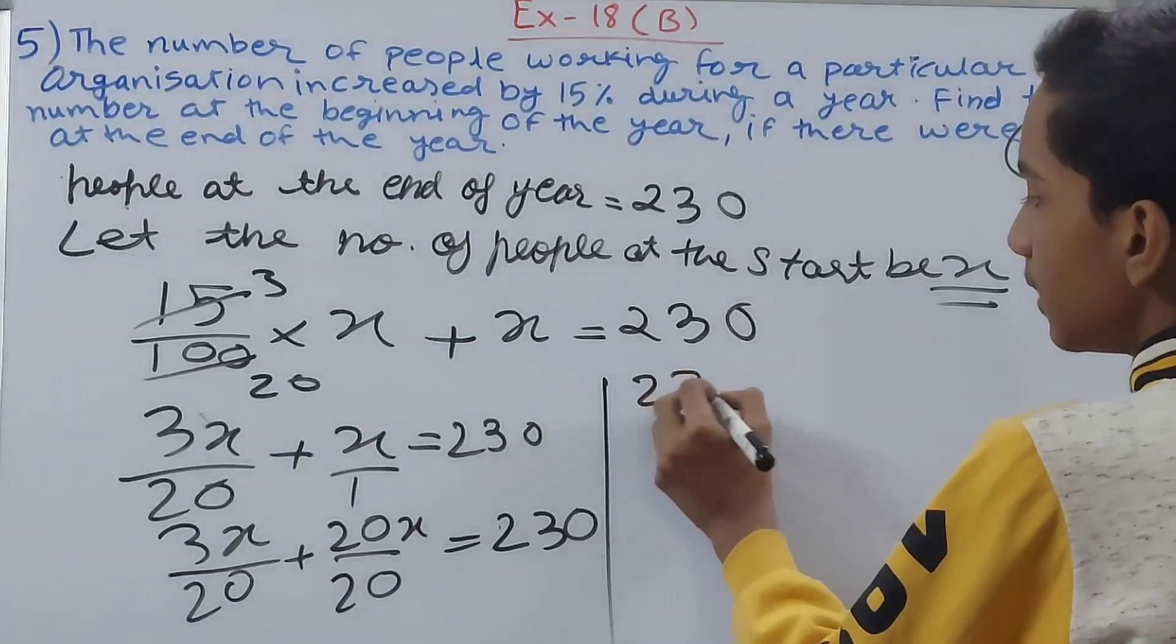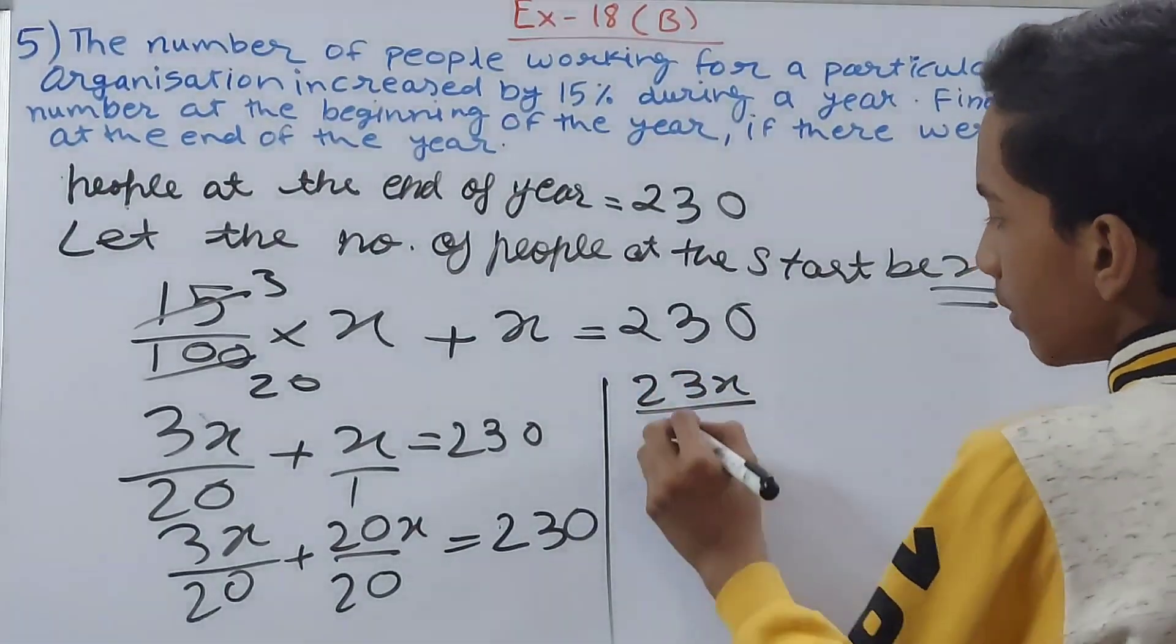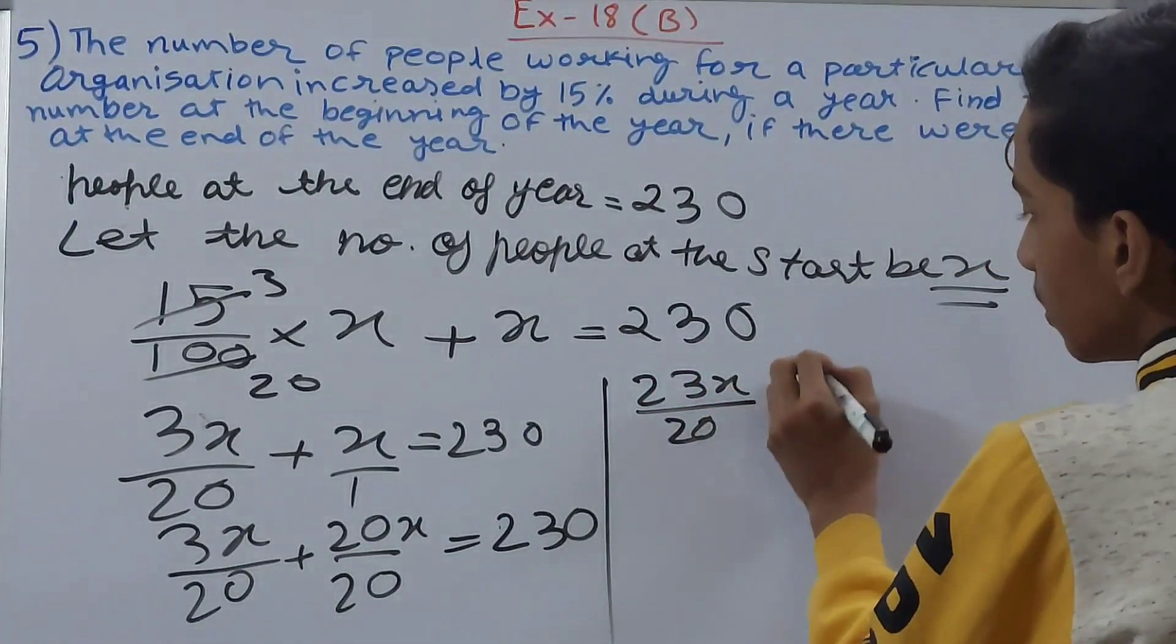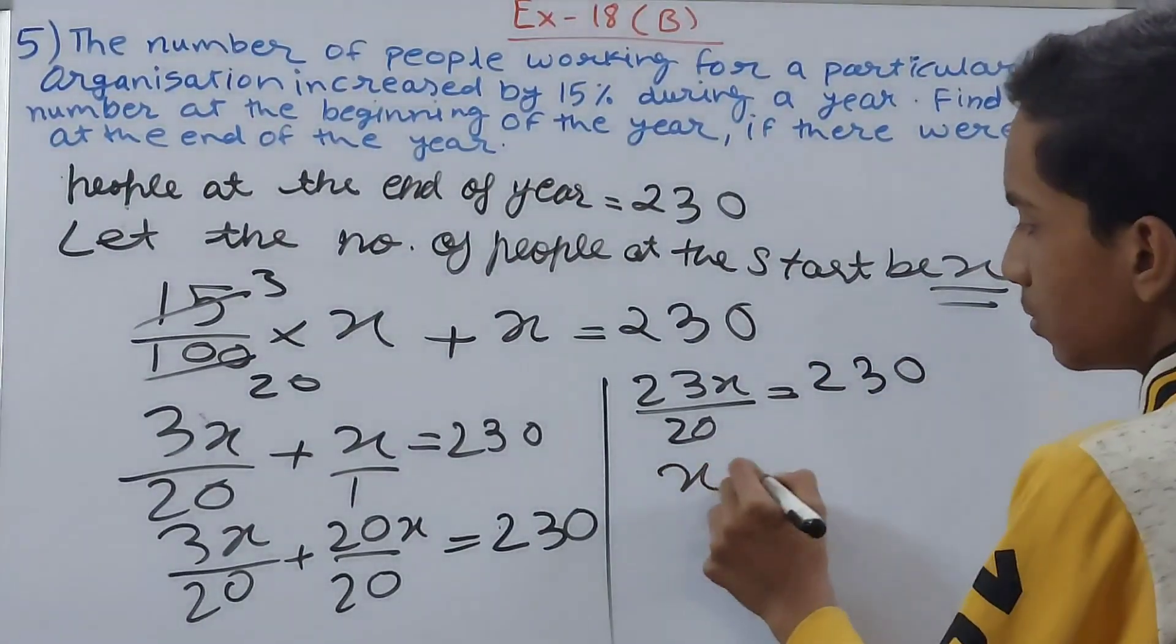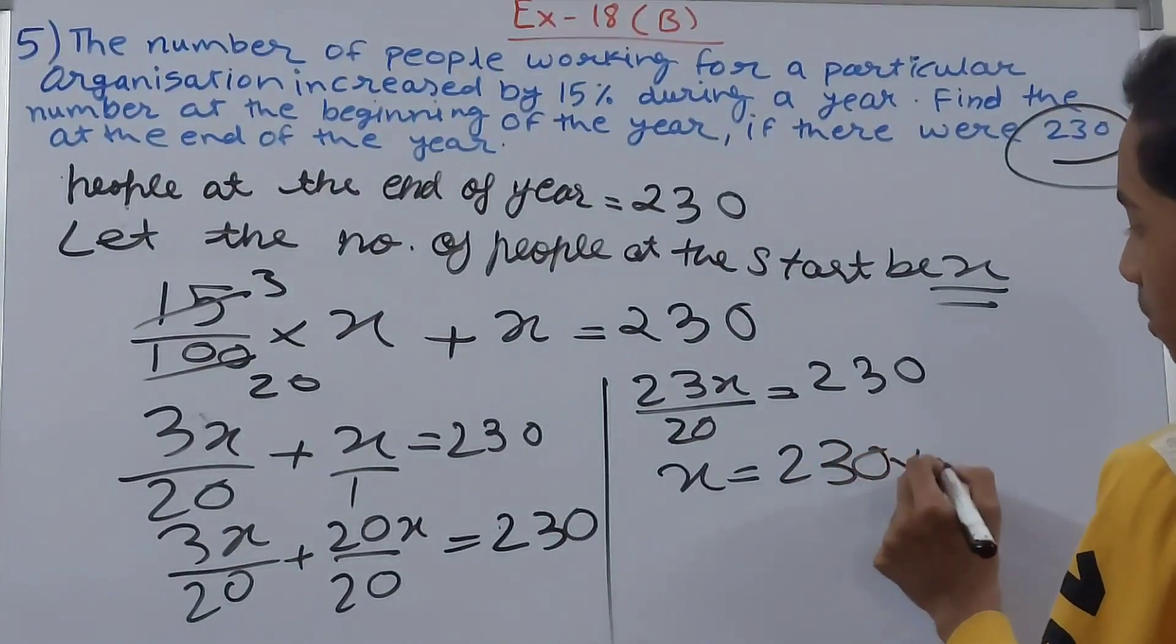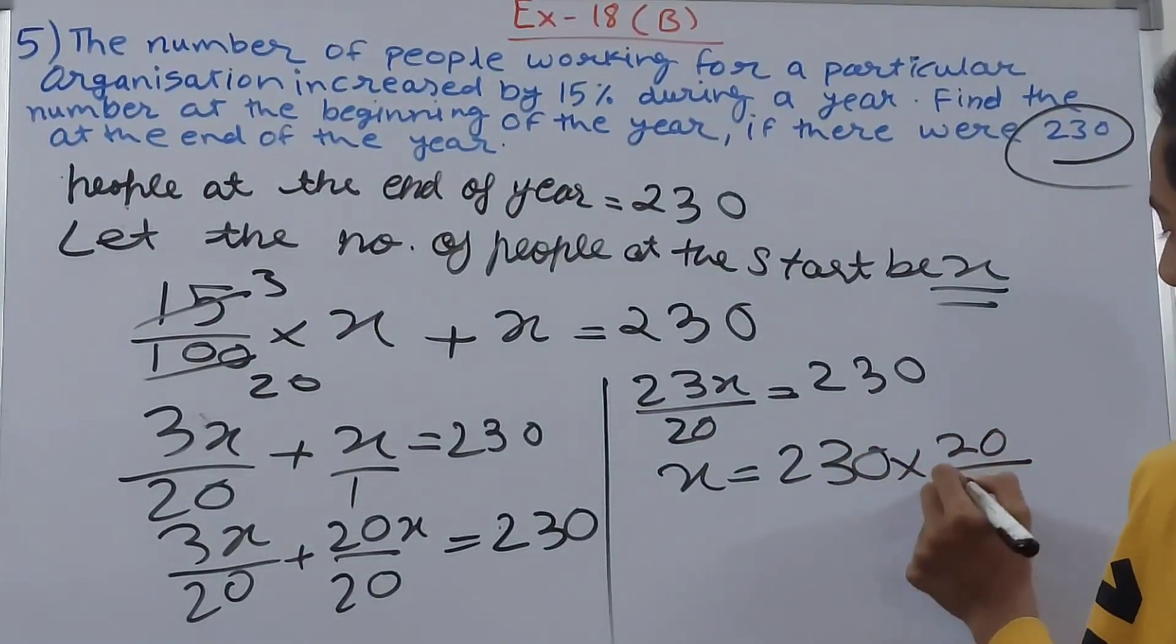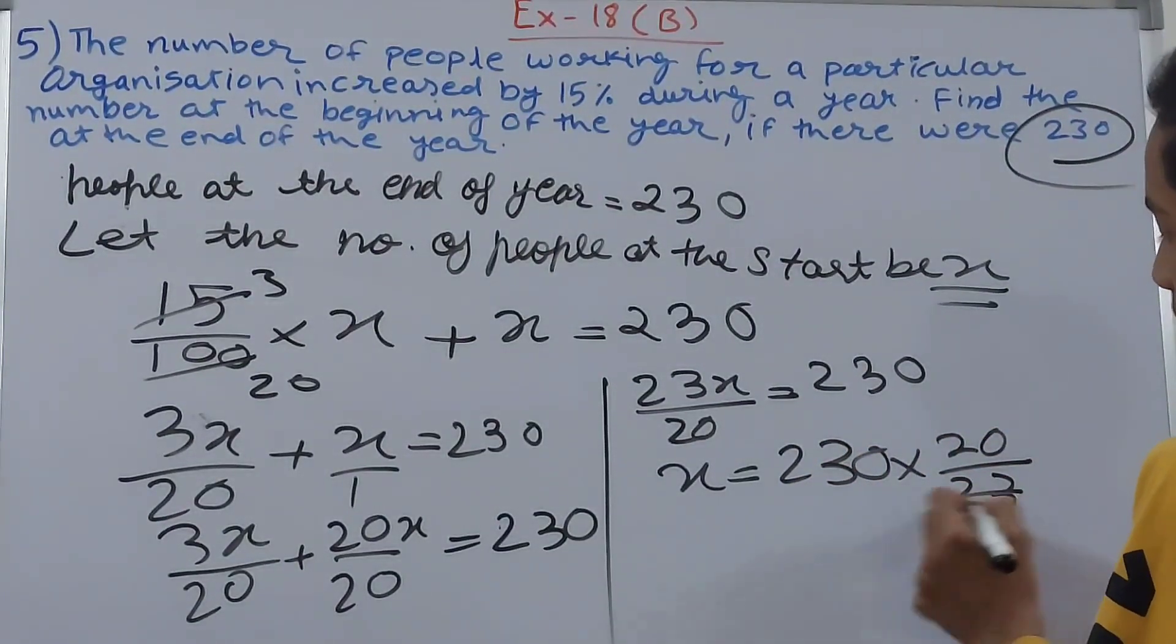So x equals to 230 into 20 upon 23. Cut this - 10 times - so this becomes 10 into 20, that becomes 200.